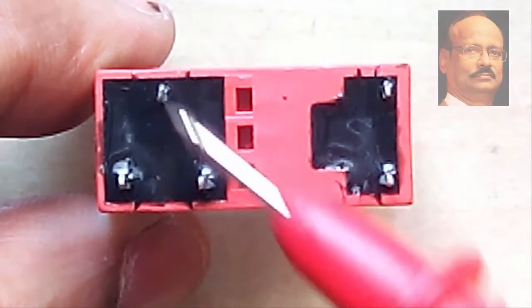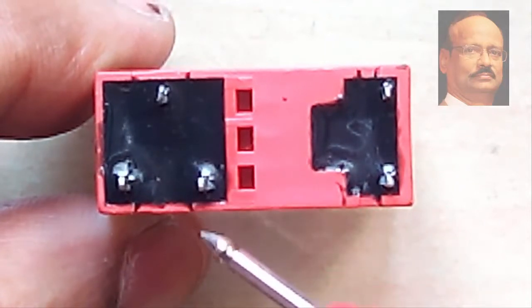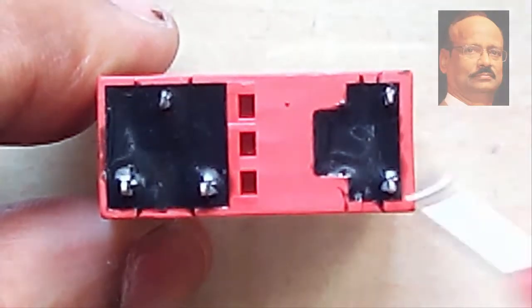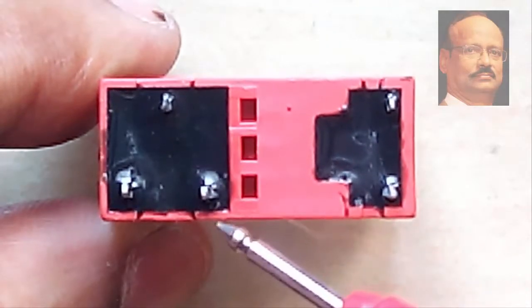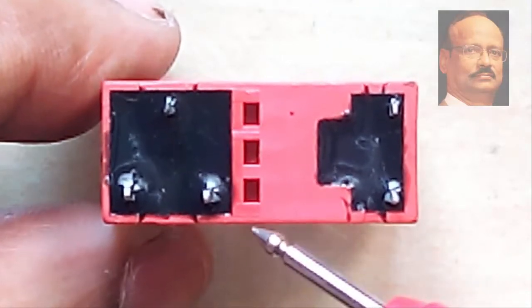You can always measure it with respect to common point, which one is NO, which one is NC. That means when the power is not given, which one is showing conduction, that is the normally closed contact.